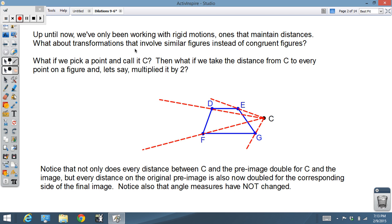Up till now we've been working with rigid motions, ones that maintain distances. Now, how about transformations that involve similar figures instead of congruent ones? Well here's what we're going to do. We're going to pick a point, and let's just pick a random point out here. This is point C.